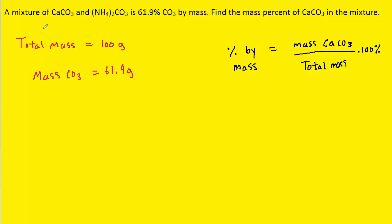What we do not know is the mass of the calcium carbonate nor the mass of the ammonium carbonate. We'll let x equal the mass of the calcium carbonate and y equal the mass of the ammonium carbonate. Since the total mass is 100 grams, we can write the equation x plus y equals 100. We can call this the mass equation, since every value — x, y, and 100 — represents a mass in grams.